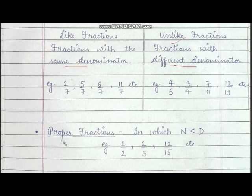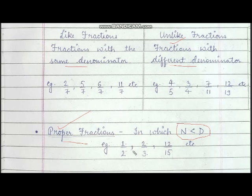Now, what is a proper fraction? Fractions in which the numerator is less than the denominator are called proper fractions. For example: 1 upon 2, 2 upon 3, 12 upon 15. Here the numerator is less than the denominator.